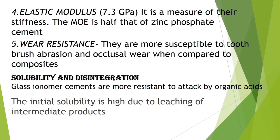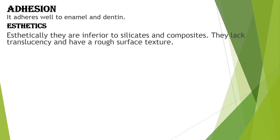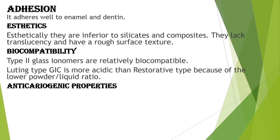Solubility and disintegration: glass ionomer cements are more resistant to attack by organic acids, though initial solubility was high due to leaching of intermediate products. Adhesion: GIC adheres very well to enamel and dentin. Aesthetically, GIC is inferior to silicates and composites — it lacks translucency and has a rough surface texture. Type 2 glass ionomers are relatively biocompatible, though luting-type GIC is more acidic than restorative type due to a low powder-to-liquid ratio.